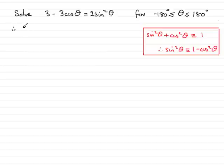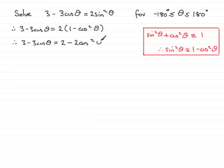So, if we make that substitution, what we therefore have is 3 minus 3 cos theta is equal to 2. And then we're going to substitute 1 minus cos squared theta in for the sine squared theta. So, we've got 1 minus cos squared theta. Now, we'll expand this and we get 3 minus 3 cos theta equals 2 times 1 is 2, and then 2 times the minus cos squared theta gives minus 2 cos squared theta.